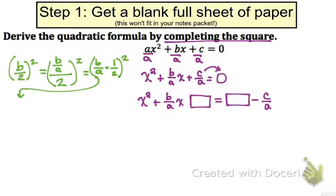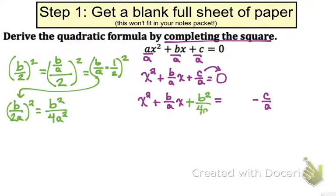Bring that down here. We're going to have (b/2a)² which is going to equal b²/4a². So what do I need to add to both the left and the right? I need to add b²/4a² and b²/4a² on both the left and the right.